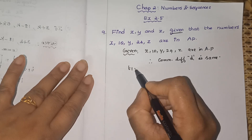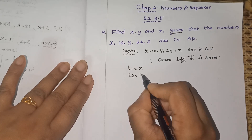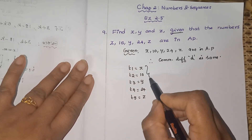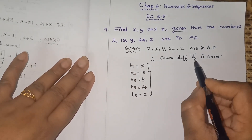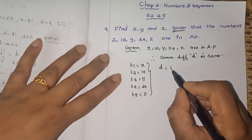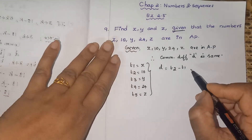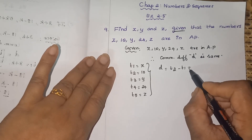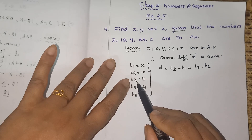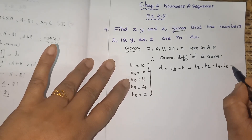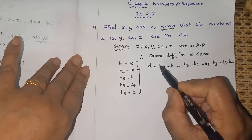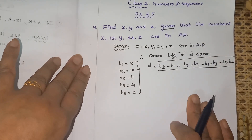Here t1 is x, t2 is 10, t3 is y, t4 is 24, and t5 is z — we have five terms total. The common difference formula is: d equals second term minus first term, i.e., t2 minus t1. Since all five terms are in AP, we equate: t2 minus t1 equals t3 minus t2 equals t4 minus t3 equals t5 minus t4.